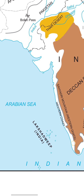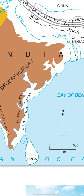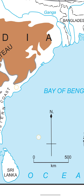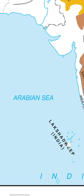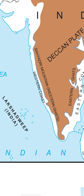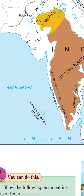India shares boundaries with three oceans: the Bay of Bengal to the east, the Arabian Sea to the west, and the great Indian Ocean to the south. In ancient times, India carried out trade with many different kingdoms and countries through these sea routes.